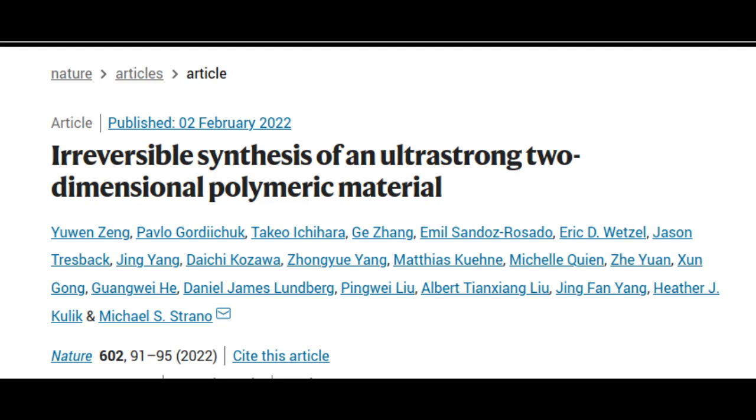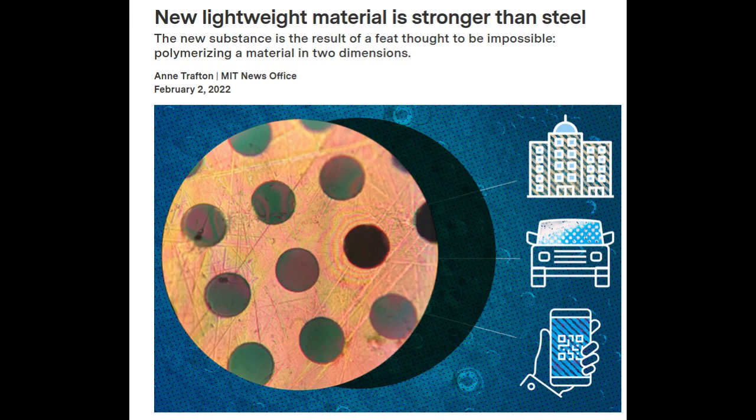Polymers, which include all plastics, consist of chains of building blocks called monomers. These chains grow by adding new molecules onto their ends. Once formed, polymers can be shaped into three-dimensional objects, such as water bottles, using injection molding.